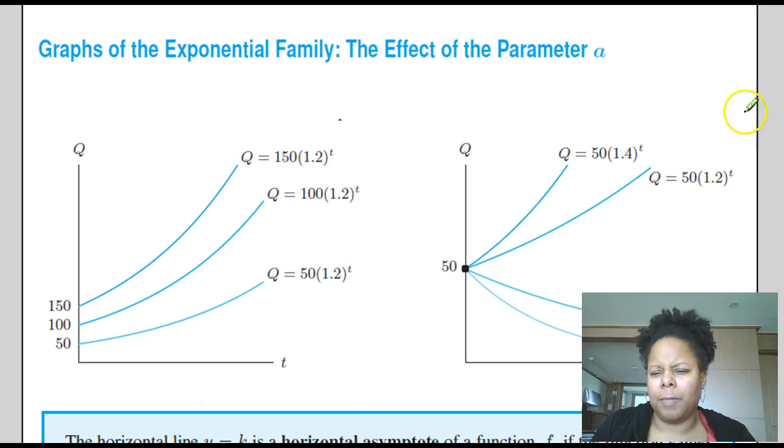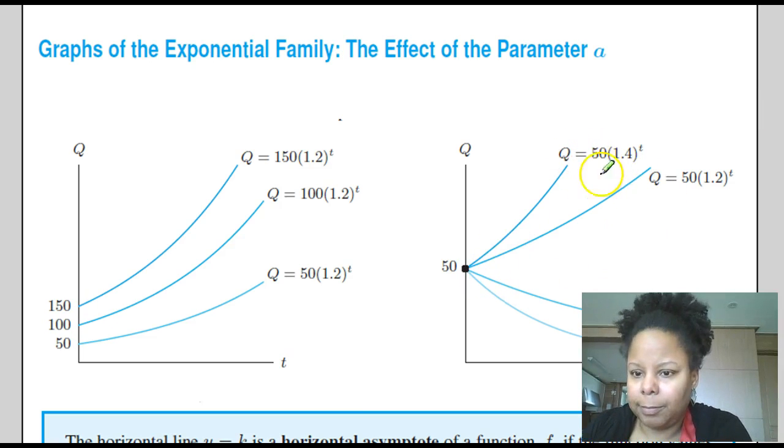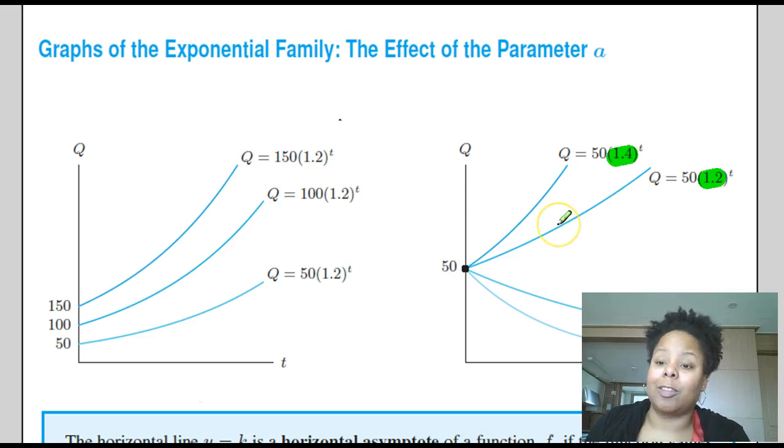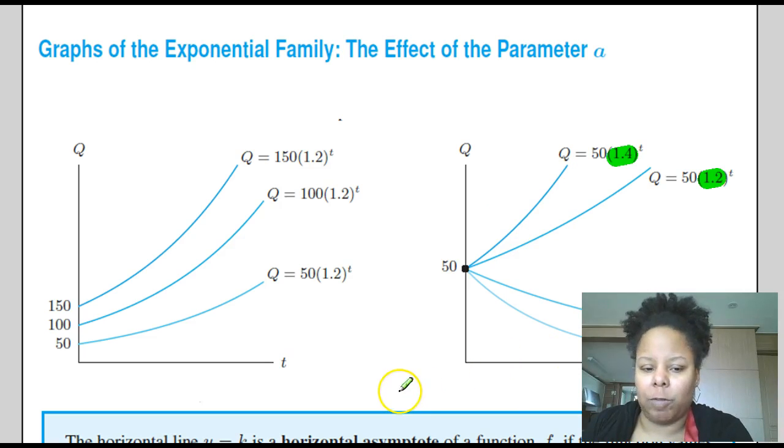If we take a look at the decay level, if we keep A the same and we change the growth factor from greater than one to less than one, you can see that in this case the y-intercept is the same, 50. The initial value is 50. But by changing the growth rate and decreasing it, you change kind of like the slope. But remember, the slope is not the same, but you can change the curve of it.